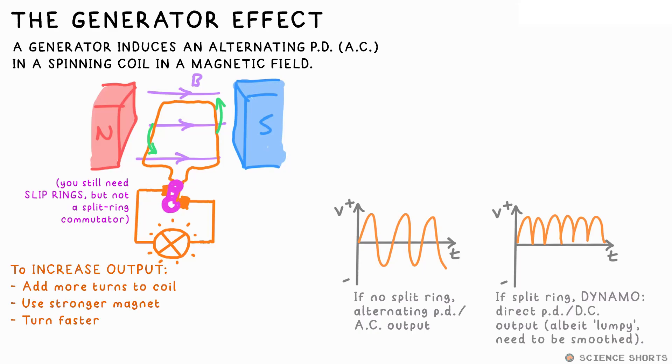To increase the output of a generator or a dynamo, just turn it faster, or similar to a motor, add more turns to the coil, or use a stronger magnet. I say turn it faster, but it's not that easy. You see, the current induced in the coil also produces its own magnetic field, and this opposes the turning that led to it being produced to begin with. So that's why it requires energy to keep it turning. And that makes sense, doesn't it? We can't get energy for free.